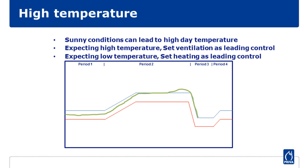This is not obvious in a glasshouse. For example, in sunny conditions, the temperature in the glasshouse rises — shown by the green line in the graph — despite opening the windows. This means the daily temperature would be higher than expected. In these sunny conditions, you adjust the temperature actively with the ventilation strategy. In this case, the ventilation strategy is therefore influencing the temperature.